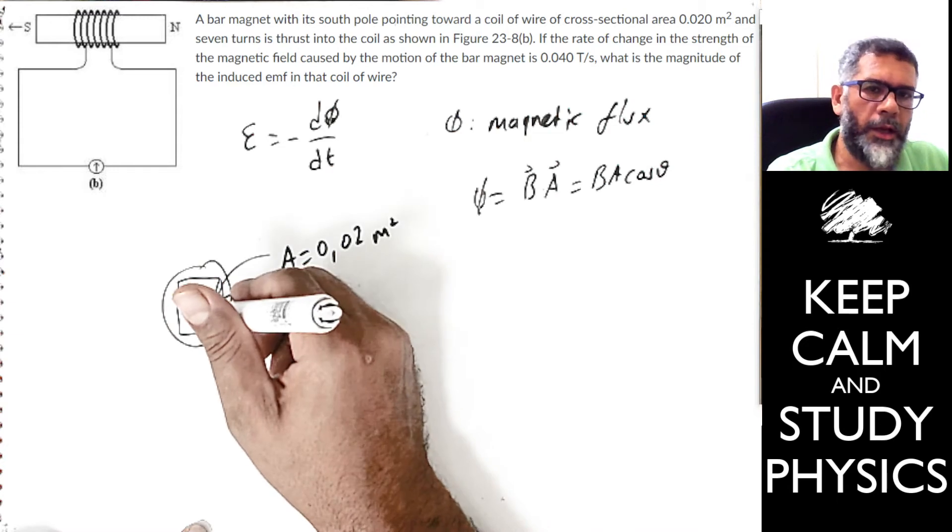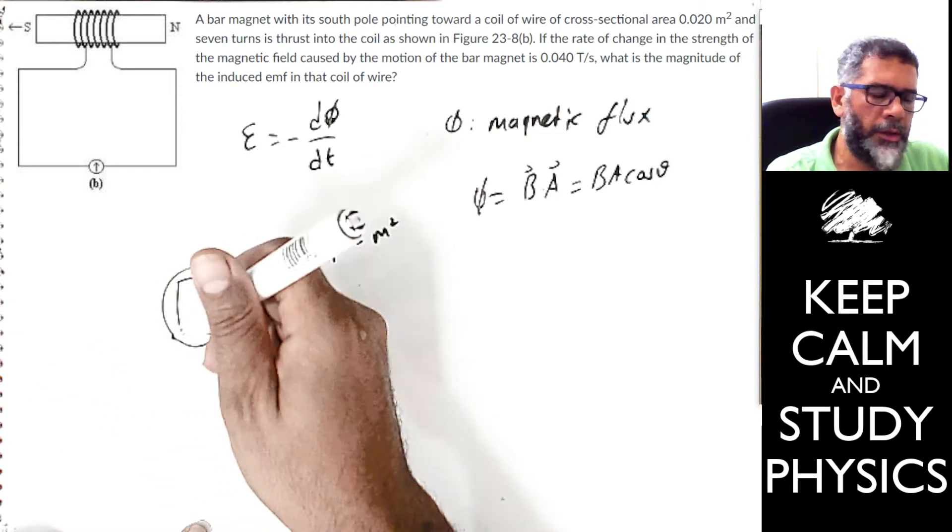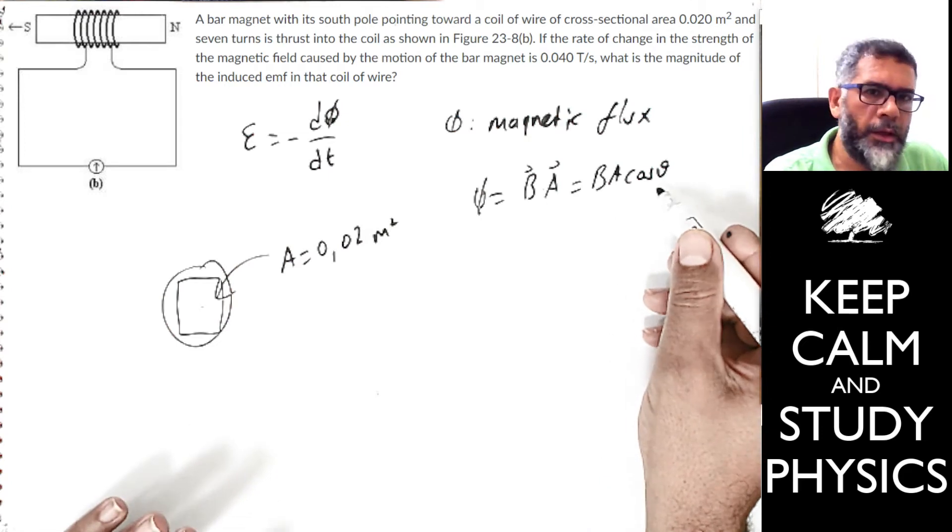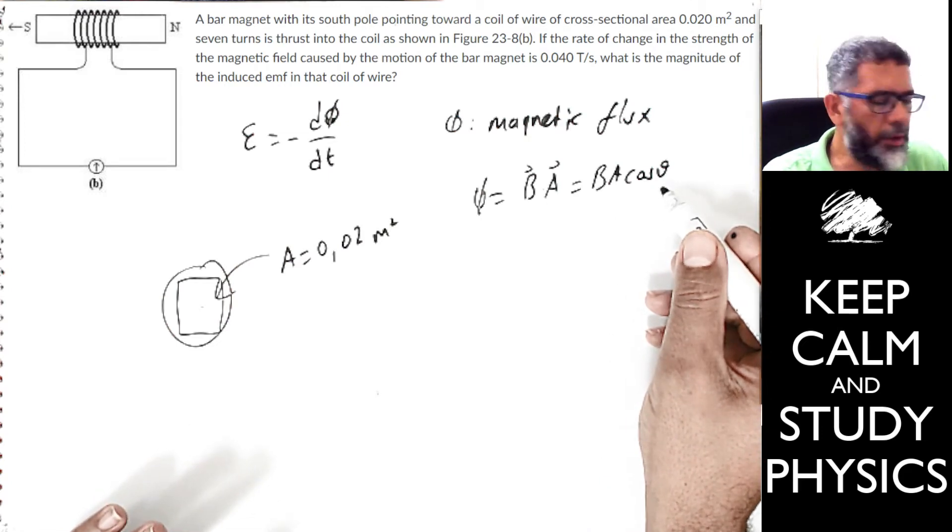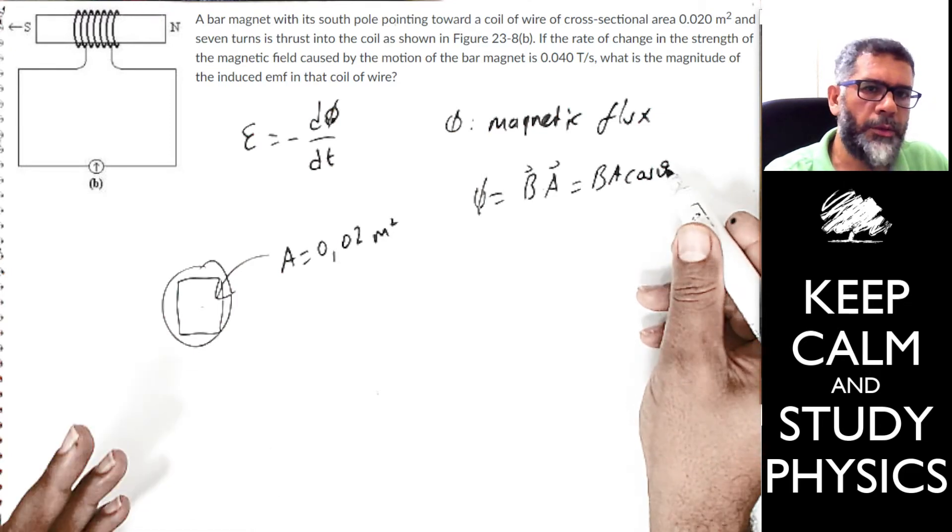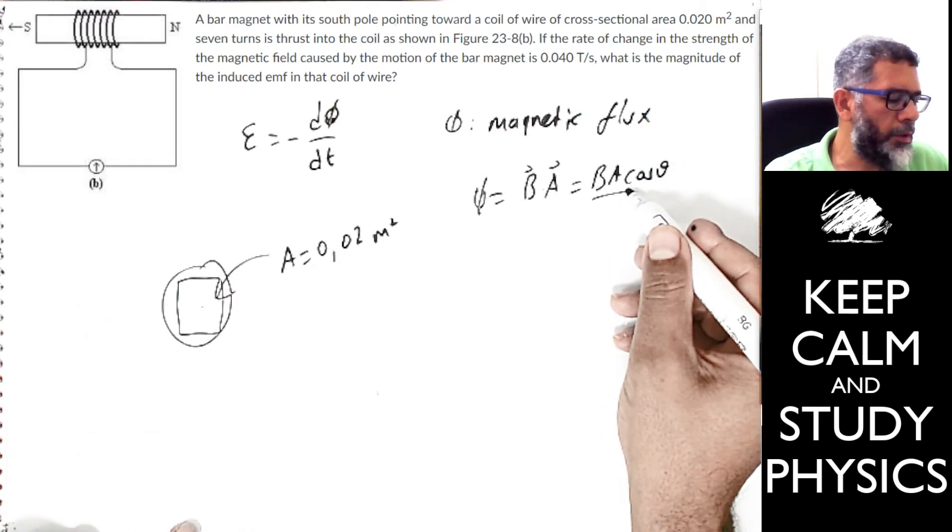But in that case, you would have B times A times cosine theta, where theta is the angle between the area vector and the magnetic field. But for the time being, since this angle is 90 degrees, the theta is going to be 0 degrees. So cosine 0 is 1. So it's just B times A.